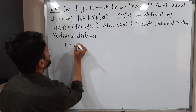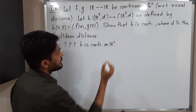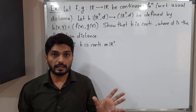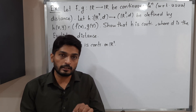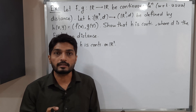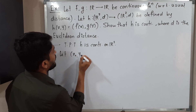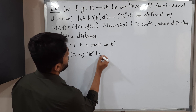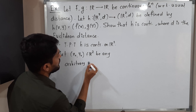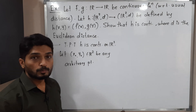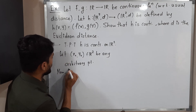To prove that H is continuous on ℝ²: when we say a function is continuous on the entire plane ℝ², it means it is continuous at each point of ℝ². So what we will do is take any arbitrary point of ℝ² and prove that H is continuous at that point. Let (x₀, y₀) belong to ℝ² be any arbitrary point, and our target is to prove H is continuous at this point.